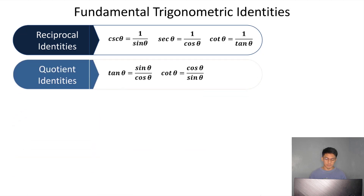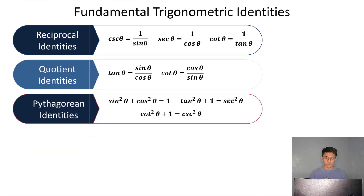For the second identity, the quotient identity, we have two formulas: tangent theta is equal to sine theta over cosine theta, and cotangent theta is equal to cosine theta over sine theta. Third, we have the Pythagorean identities — three formulas: sine squared theta plus cosine squared theta equals one; tangent squared theta plus one equals secant squared theta; and cotangent squared theta plus one equals cosecant squared theta.